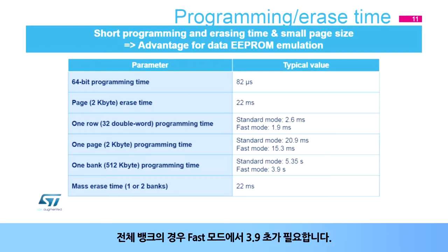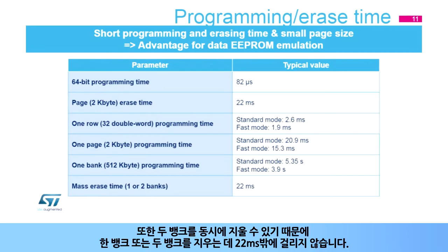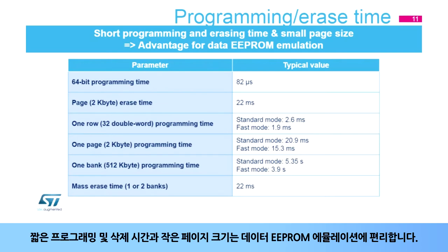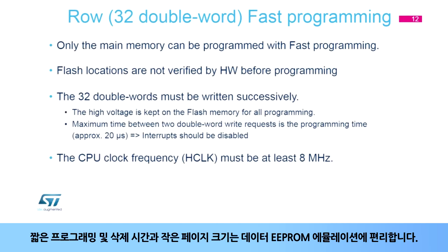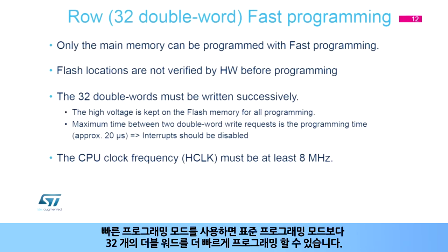For the complete bank, it requires 3.9 seconds in fast mode. The page erase time is 22 milliseconds. It also requires only 22 milliseconds to erase one or both banks, as both banks can be erased simultaneously. The short programming and erase time, plus the small page size, make it convenient for data EEPROM emulation. A fast programming mode allows you to program 32 double words faster than in standard programming mode.